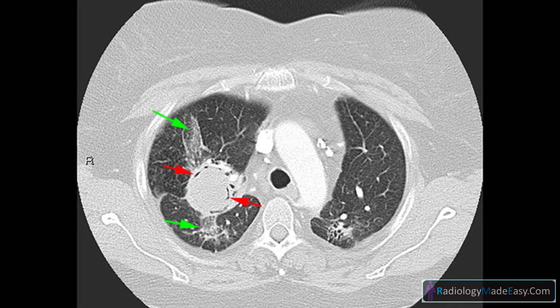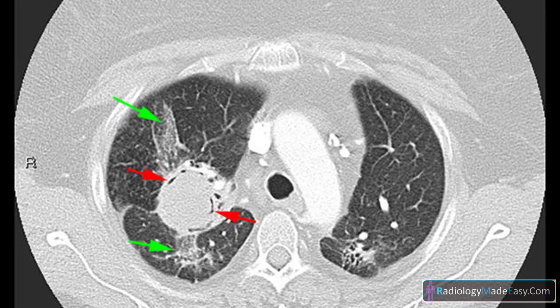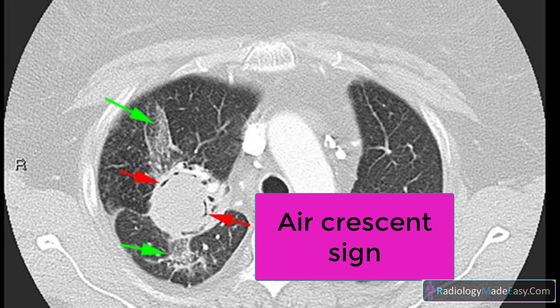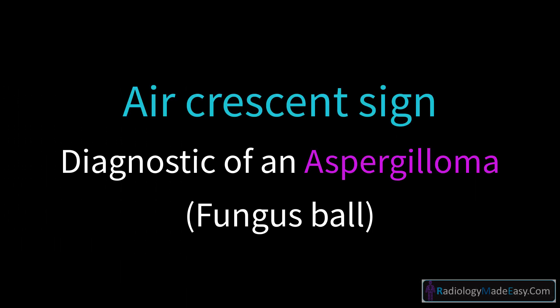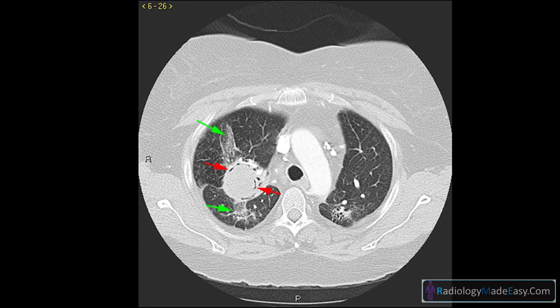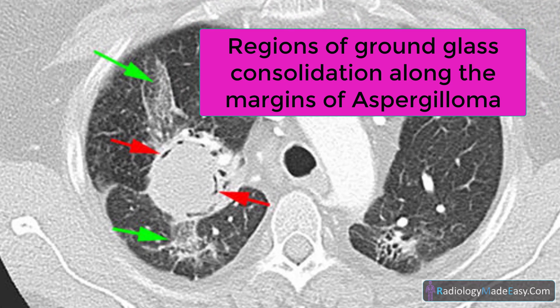The red arrows demonstrate lucency representing air along the margins of the lesion, which is known as the air crescent sign. This sign is diagnostic of an aspergilloma, also known as a fungus ball. This consolidation represents a collection of the fungus Aspergillus within a pre-existing lung cavity. The green arrows indicate regions of ground glass consolidation along the margins of the aspergilloma.